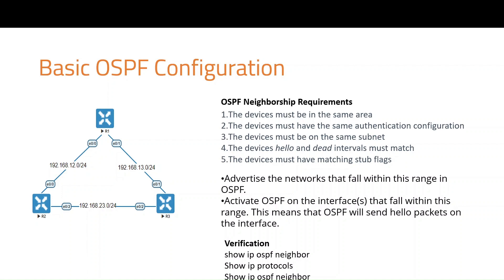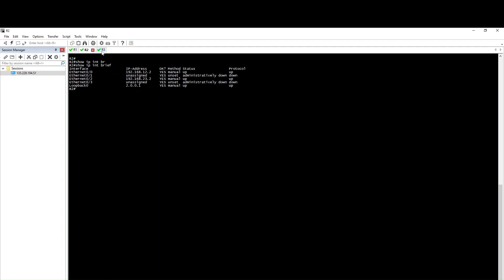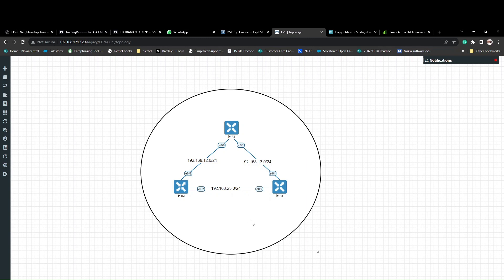The topology consists of three routers — R1, R2, and R3 — all in area 0. We will log in and configure the basic configuration, including IP addresses and interfaces using show IP interface brief.